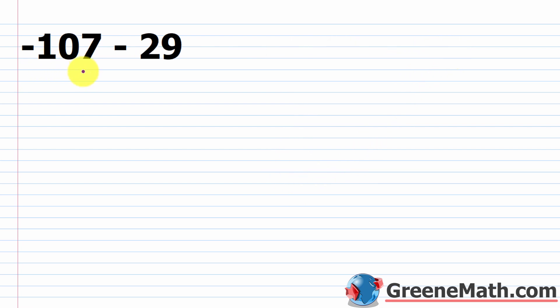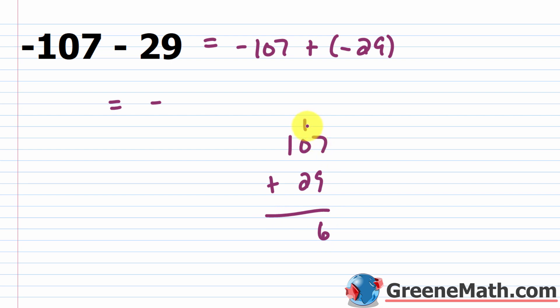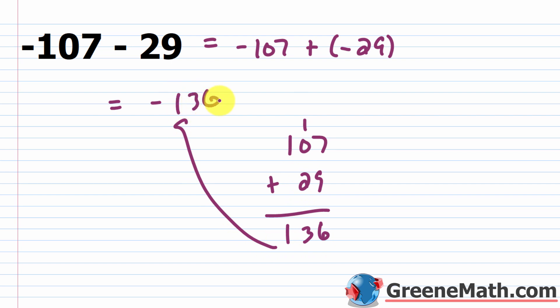What about negative 107 minus 29? This equals negative 107 plus negative 29. We know the answer is negative, so just add the absolute values: 107 plus 29. Working it out: 7 plus 9 is 16, put down 6 carry the 1; 1 plus 0 plus 2 is 3; bring down the 1, giving 136. So the final answer is negative 136.